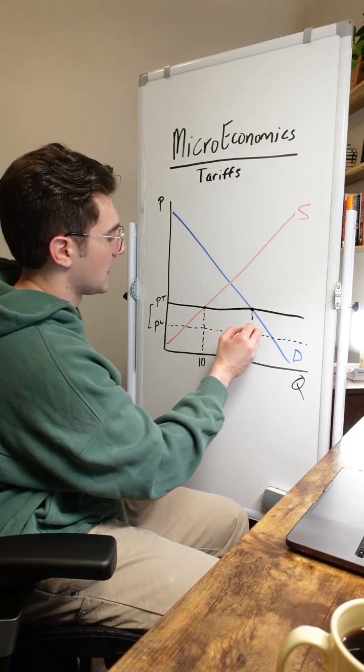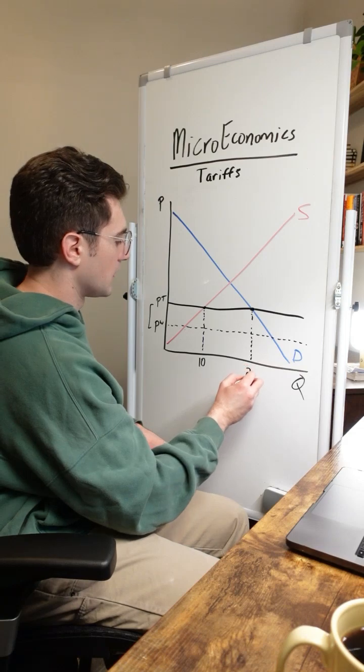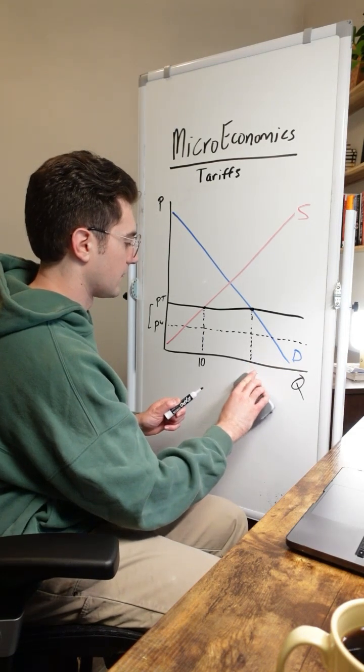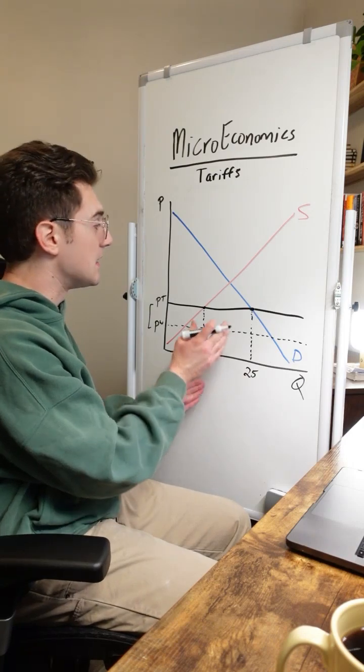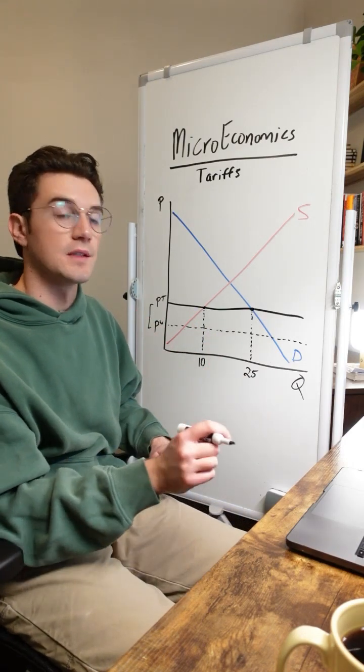And domestic consumers are going to demand this many units. We'll call it 20. Actually, I'm going to call this 25 to make it easier for us to understand the numbers. This means that in this country, they are importing 15 units.